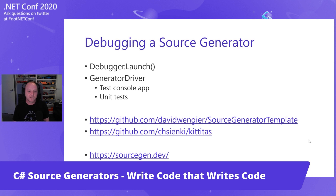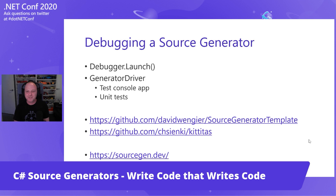If you want to get more serious about things, Chris — the developer on the compiler team who wrote all the source generator stuff — wrote a product called Kittitas. It's an MSBuild SDK with a .NET global tool, designed to enable debugging of source generators and analyzers. It's a much more well-thought-out system. Then sourcegen.dev — that's the website mentioned at the start that I wrote — is probably the easiest way to get going. You get two boxes on the screen where you can type code: one is the program, one is the source generator, and you can see what it generates and what it outputs.